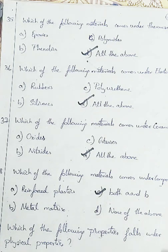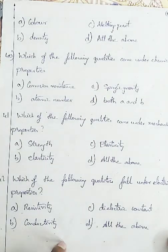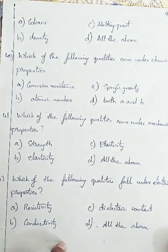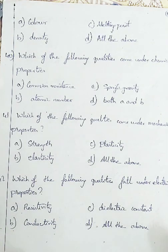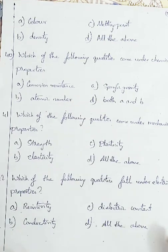Question number 39: which of the following properties falls under physical properties? Option A: color, Option B: density, Option C: melting point, Option D: all the above. Color, density, and melting point are all physical properties. So we are going with Option D, all the above.